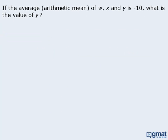Here we are told that the average of three numbers is negative 10, and we want to find the value of Y. If the average of three numbers is negative 10, we could say that the sum of the three numbers divided by 3 equals negative 10. Or, if we multiply both sides by 3, the sum of the three numbers equals negative 30. Since the target question asks us to find the value of Y, we have neatly summarized all of the relevant information and are now ready to examine the statements.